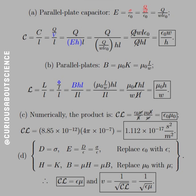For a parallel plate capacitor, E equals sigma over epsilon naught, where sigma is the surface charge density. The surface area is W times L, so Q is spread over the whole thing, giving E equal to Q over W·L·epsilon naught. Capacitance per unit length is C over L, and since capacitance equals Q over V and V equals E times H, substituting and cancelling Q and L gives epsilon naught times W over H.